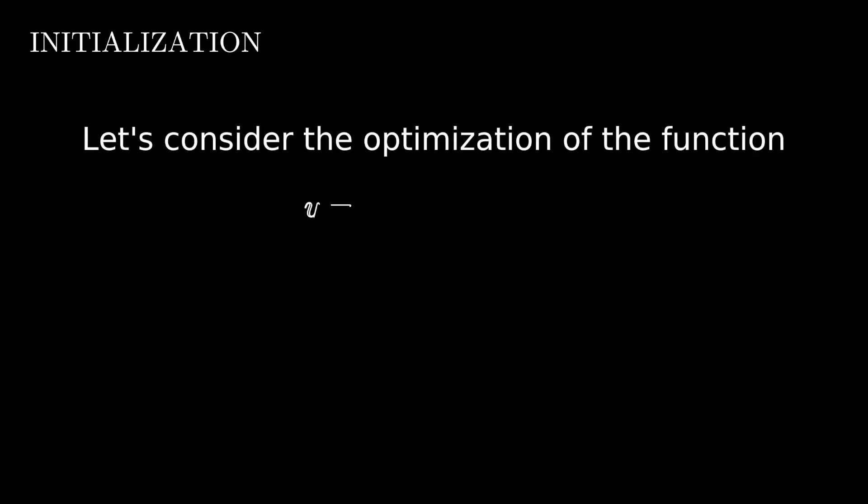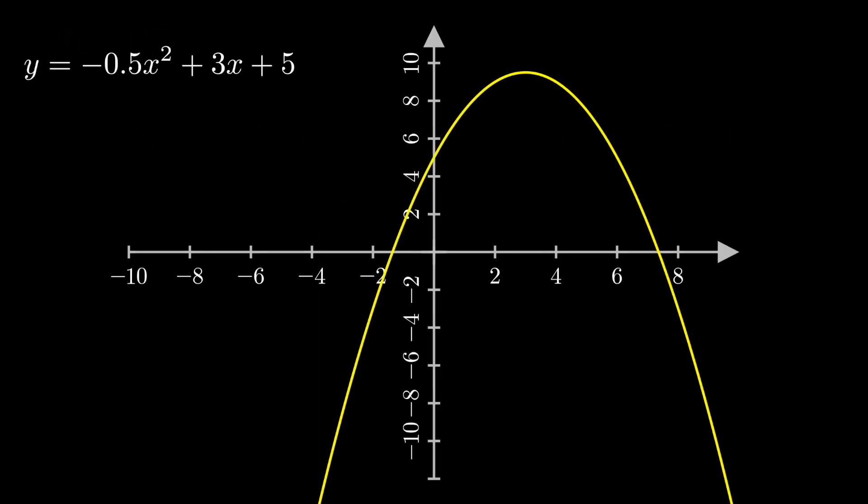We'll now explore all the steps in detail by going through an example. We'll optimize a single variable function using the algorithm discussed previously. Consider the single variable function shown on the screen: y = -0.5x² + 3x + 5. Our task is to find that value of x that maximizes y. This is a simple function that has only a single maxima. As can be seen from the graph, the maxima occurs at x = 3. With no prior information apart from the equation of the function, we hope to arrive at this answer using only our algorithm.